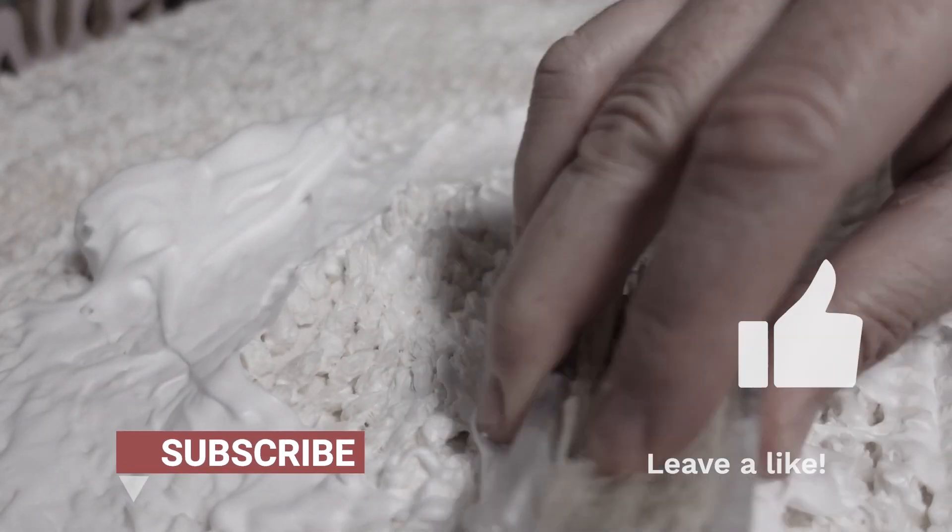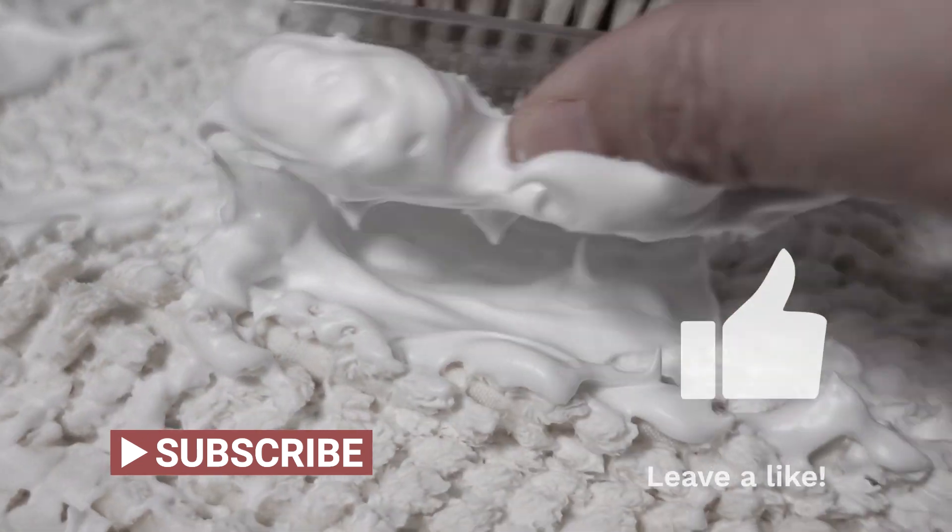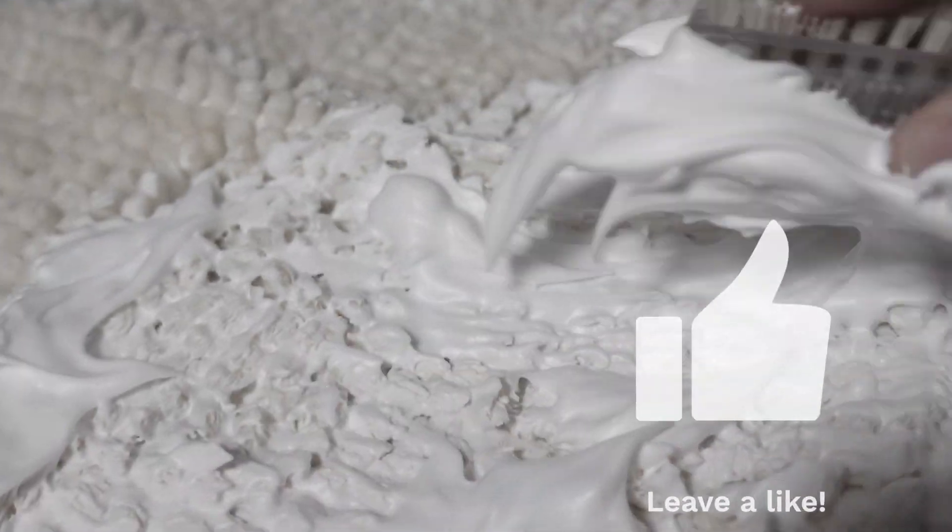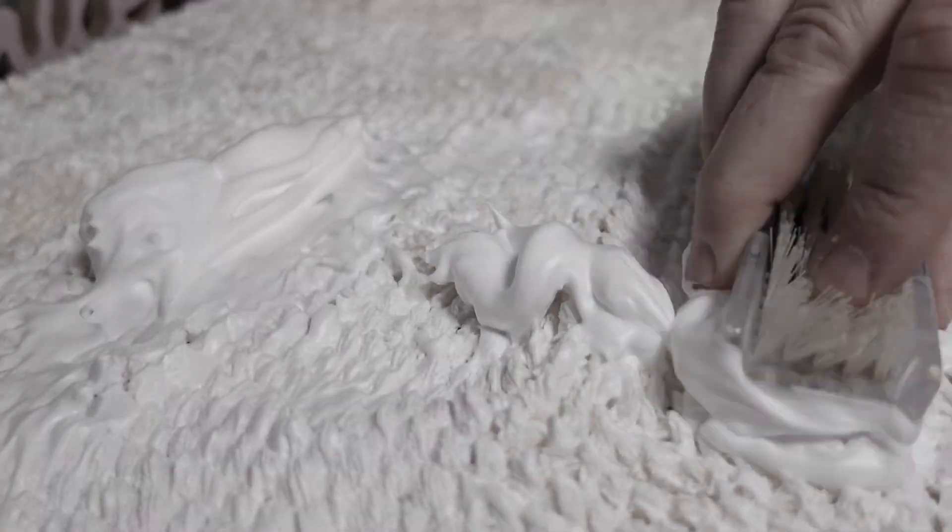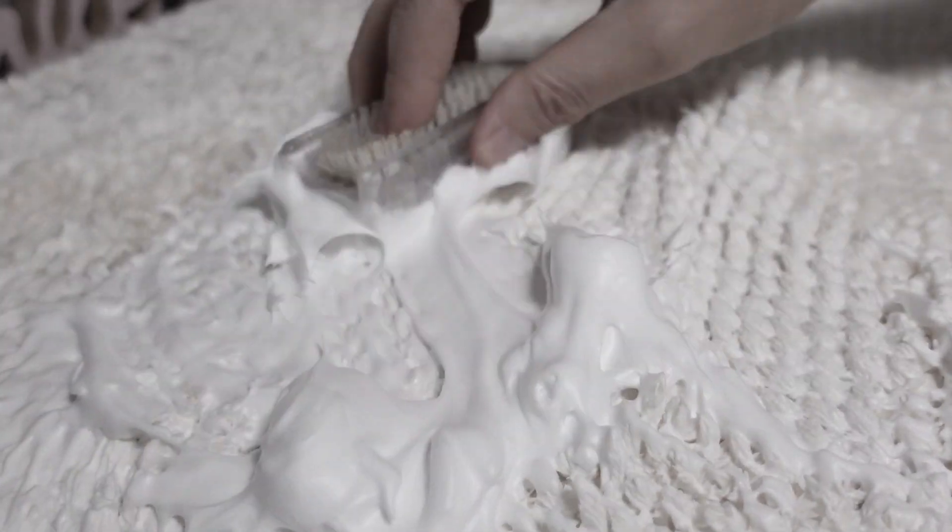Gently scrub the area with a sponge or soft brush. You may need to use a little elbow grease to get the stain out. The shaving cream also contains detergents that will help remove the dirt and stains from your carpet.